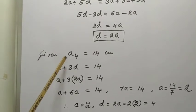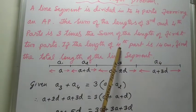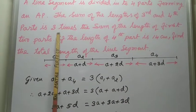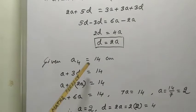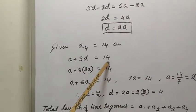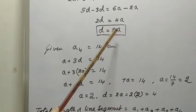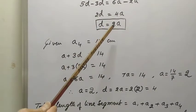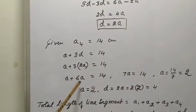Now, given that A4 equals 14 centimeters. If the length of the 4th part is 14 centimeters, then A4 equals 14. A4 means A plus 3D equals 14 centimeters. This is another equation — substitute D equals 2A from equation 1. So A plus 3 times 2A equals 14, which gives A plus 6A equals 14.